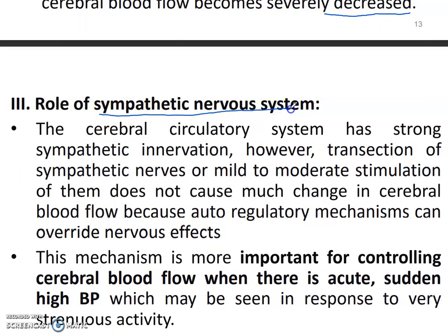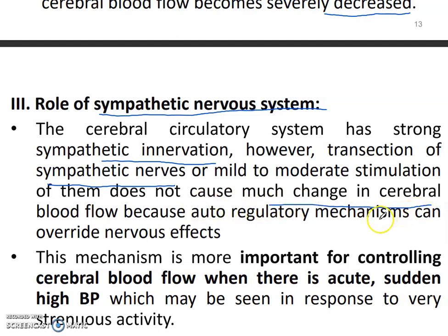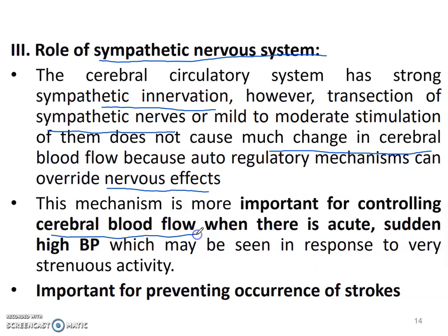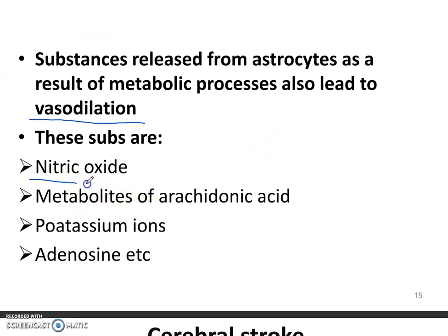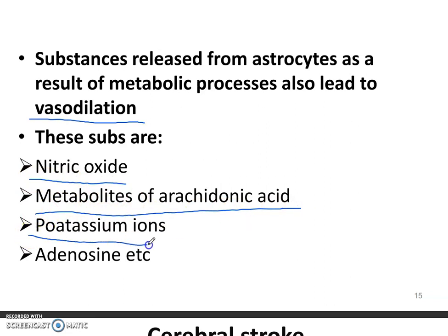There is also the role of the sympathetic nervous system. The cerebral circulatory system has strong sympathetic innervation, but transaction of sympathetic nerves does not cause much change in cerebral blood flow. The auto-regulatory system overrides the nervous effects, which is important for controlling cerebral blood flow during acute rises in high blood pressure in response to strenuous activity, and it is important for preventing the occurrence of strokes. Substances released from astrocytes as a result of metabolic processes also lead to vasodilation; these are nitric oxide, metabolites of arachidonic acid, potassium ions, and adenosine.